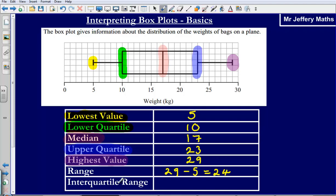Then the interquartile range, well this is just the difference between the upper quartile and the lower quartile. So the upper quartile is 23 minus the lower quartile, 10. So our interquartile range would be 13.